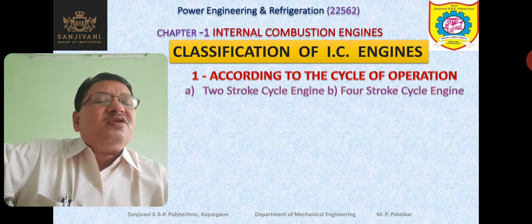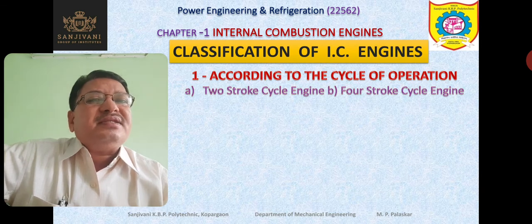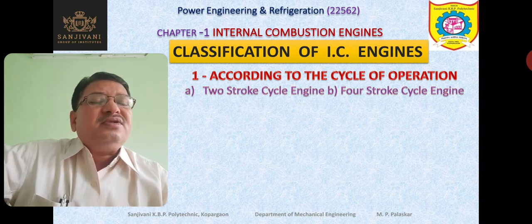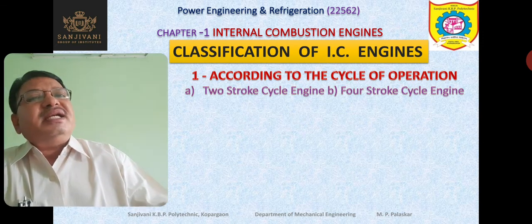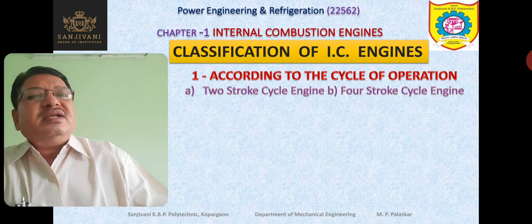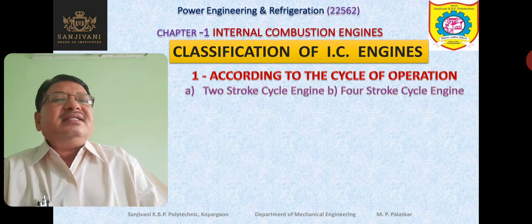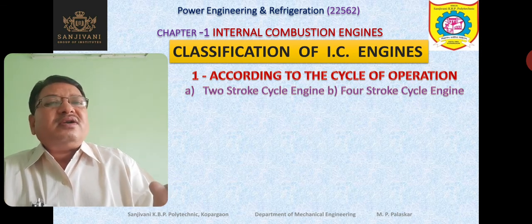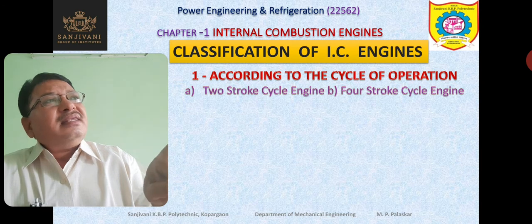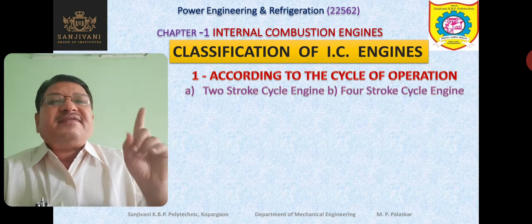During one stroke of the piston, the crank revolution is 180 degrees — that is half a revolution. So during two strokes, one revolution is completed. In a two-stroke engine, one cycle is completed in two strokes or in one revolution of the crankshaft.